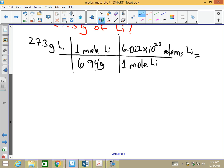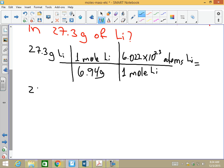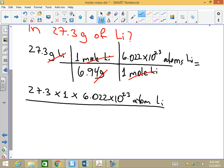So make sure we do this correctly. We have 27.3, only grams, because this cancels with that. That cancels with that. Therefore, the only thing I have left here is a number. 27.3 times 1, which makes no difference at this point. 27.3 times 6.022 times 10 to the 23rd atoms of lithium divided by 6.94, just a number.